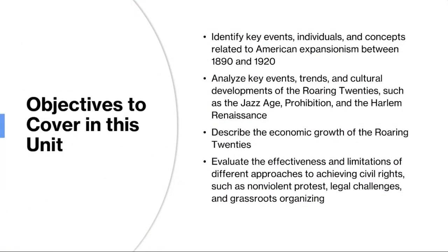American expansionism between 1890 and 1920 was marked by a series of key events, individuals, and concepts that shaped the nation's trajectory. One would be a theme that you're familiar with, which is Manifest Destiny — the belief in the inherent right of the United States to expand its territory from coast to coast, driving westward expansion and the acquisition of new territories such as Alaska and Hawaii.